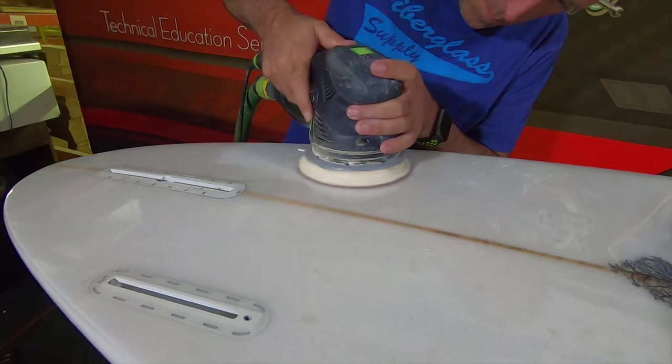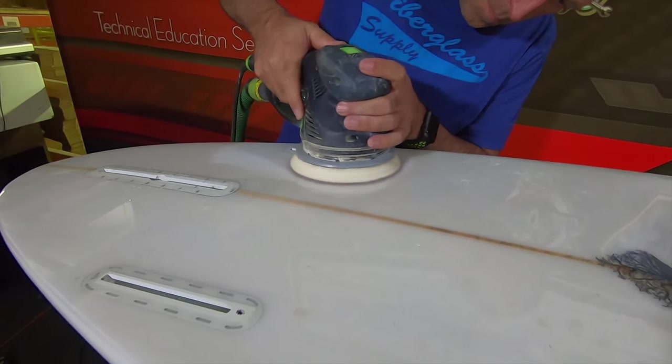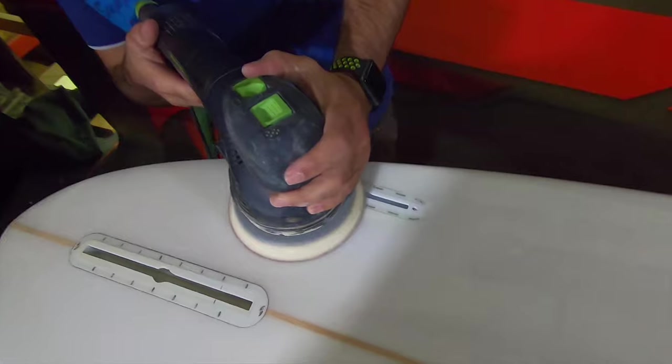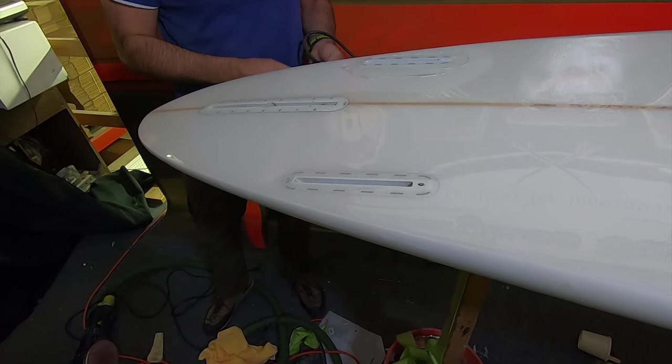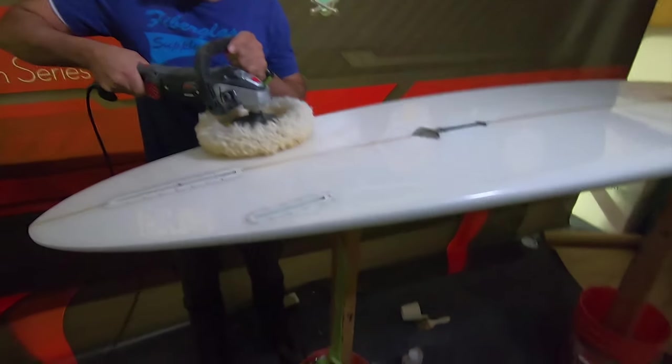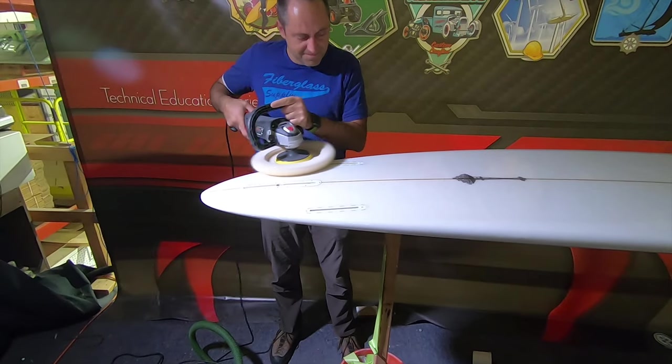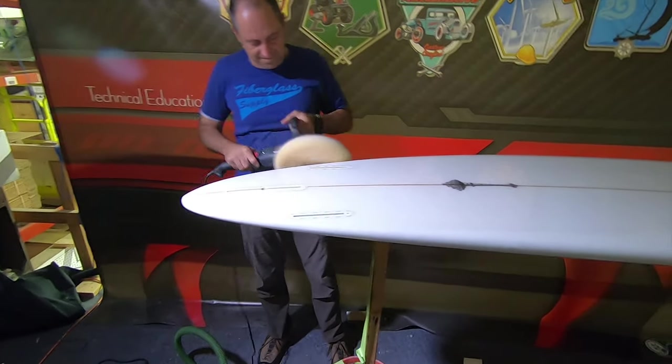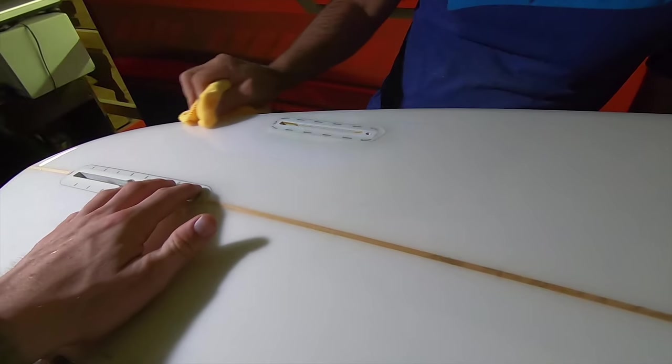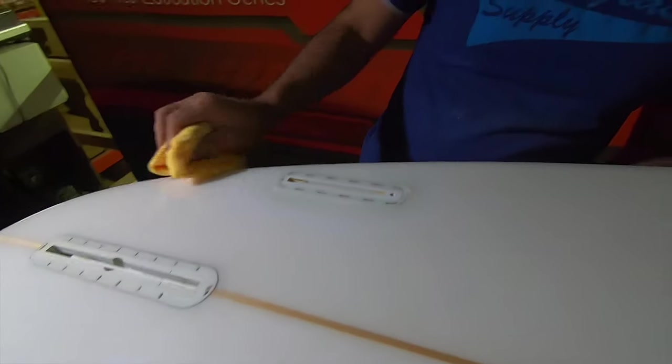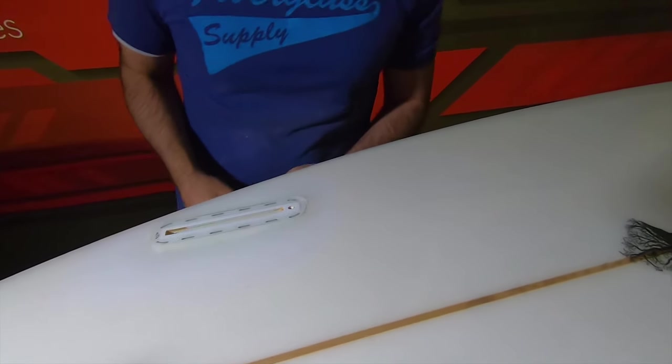Then we give it a final sand where we start usually at a higher grit like 220 and go all the way up to 800 or 1000 grit. In this case this board is glossed or polished. So once we get that up to 1000 grit we get out the buffer and give it a little shine. And that's it at that point. Put the fin screw back in, put the fin in, and go surf it.